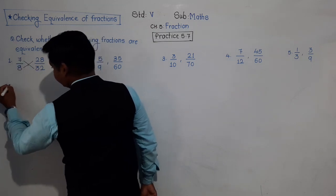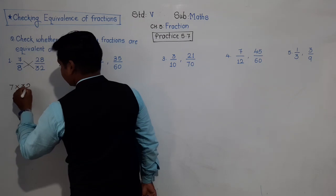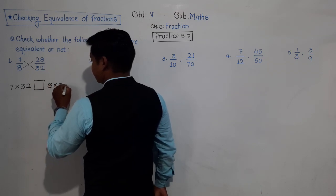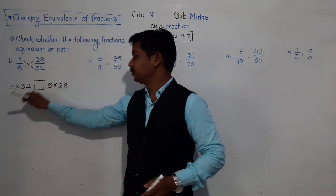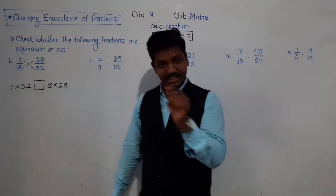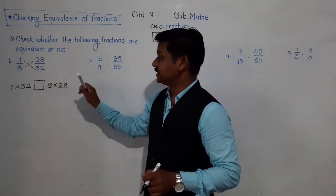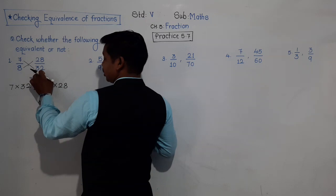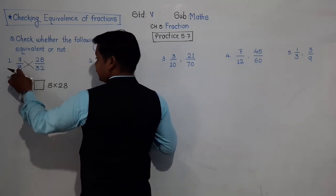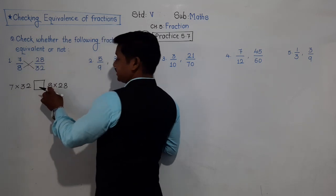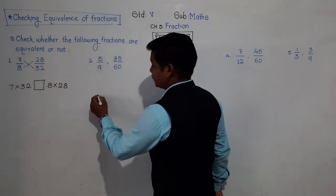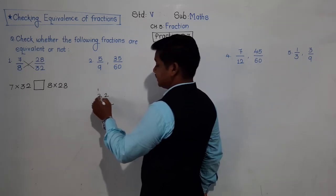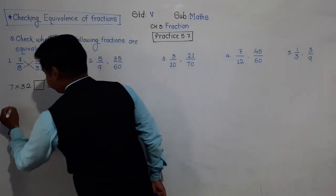We write 7 into 32 on one side. We write a box in the middle — we have to write either equal or not equal there. And 8 into 28 on the other side. Cross product means: numerator of the first fraction times denominator of the second, and denominator of the first times numerator of the second. Let's multiply: 32 into 7 — 7 twos are 14, 1 carry, 7 threes are 21 plus 1 is 22 — so 224.